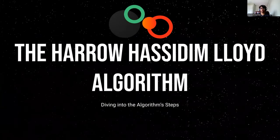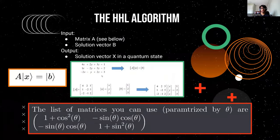The Harrow-Hastam-Lloyd algorithm, also known as the HHL algorithm. The HHL algorithm takes a matrix A, which contains the coefficients of the equations that we want to solve. Solution vector B contains the value on the right hand of the equal sign, and the output solution vector X contains the variables that we're solving for.